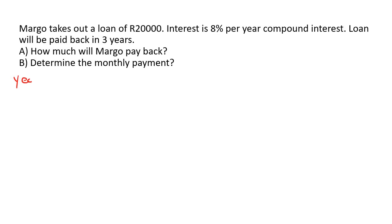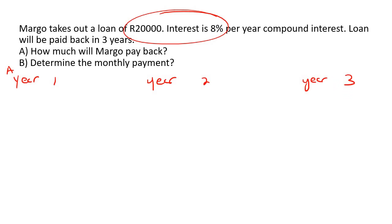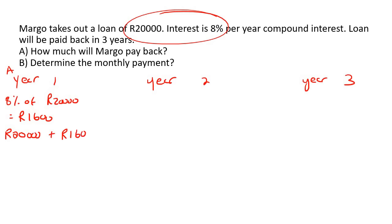We're going to do year number one. For question A, we're going to do year one, year two, and year three. So for year number one, it's 8%, so we're going to say 8% of 20,000, and that will give you 1,600 rand. So the loan will now be — she now owes them 20,000 plus they've added another 1,600 — so she now owes them 21,600.